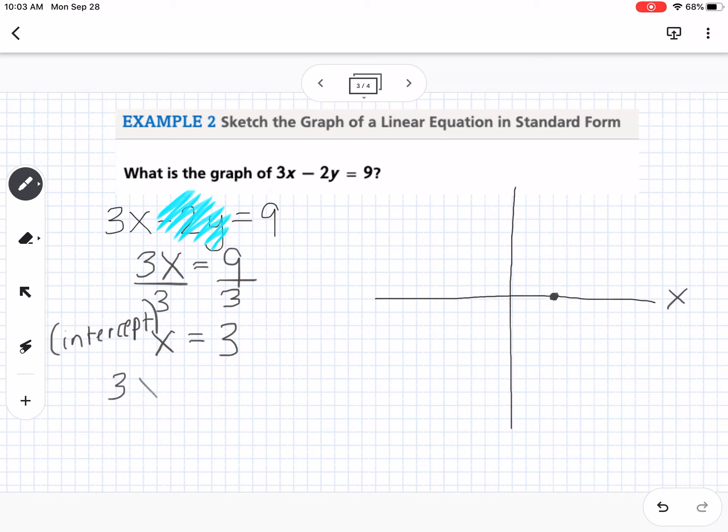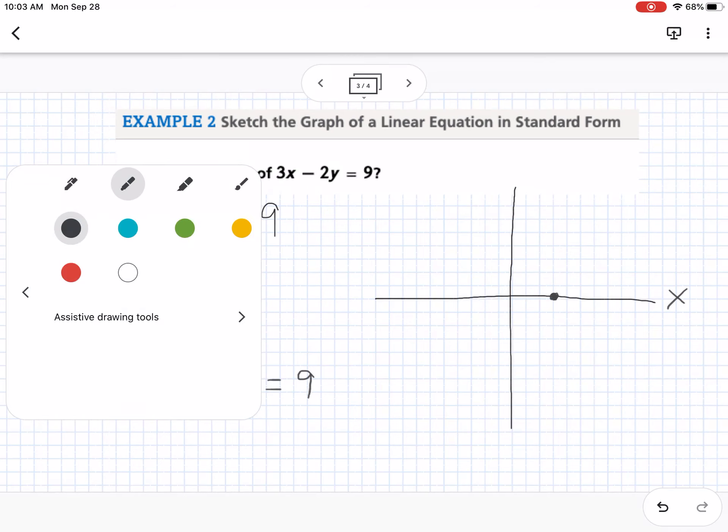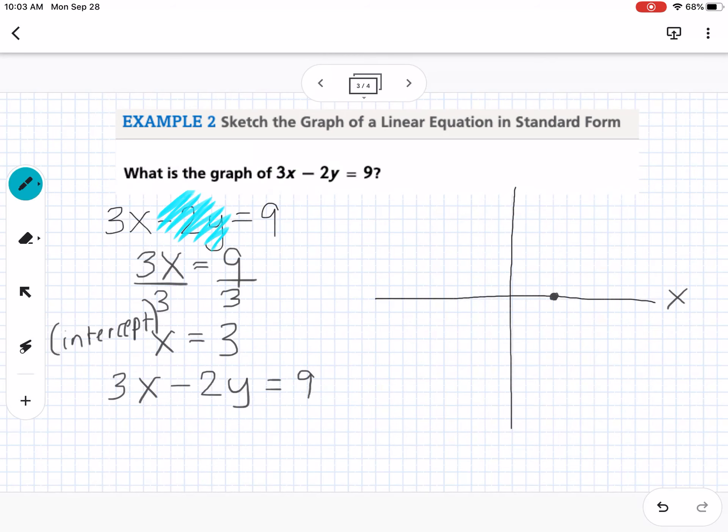Now I'm going to do the same thing for the same equation. So we have 3X minus 2Y equals 9. And this time, we're going to cover up the X value. So that means that now I have negative 2Y equals 9. Notice I kept the minus sign in front of the 2Y, because that's going to tell us that it's negative. So I'm going to divide by negative 2 on both sides, and I get Y equals negative 4.5.